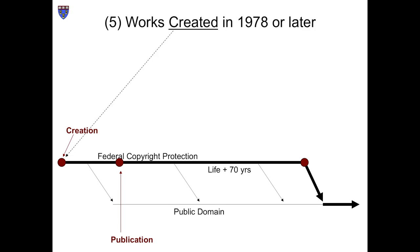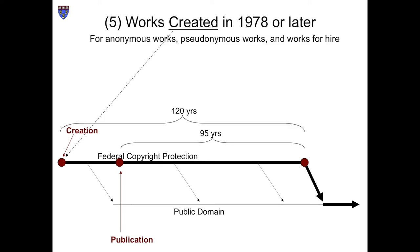We come finally to the newest set of works: those created in 1978 or later. These last for the life of the author plus 70 years, meaning they will start expiring in 2048 at the earliest. Anonymous works, pseudonymous works, and works for hire get treated a bit differently — they will begin to expire in 2073 at the earliest.